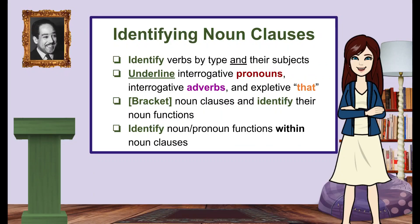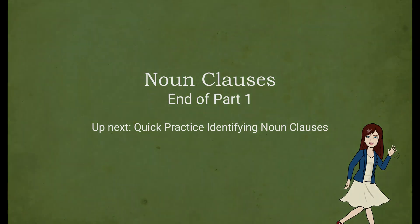To review, here are the steps to take when identifying noun clauses: identify verbs by type and their corresponding subjects; underline interrogative pronouns, interrogative adverbs, and expletives 'that'; bracket noun clauses and identify their functions; and lastly, identify noun and pronoun functions within the noun clauses. We'll take a break here, and in the next video you'll practice identifying noun clauses in the sentences on page 3 of your handout. See you soon!